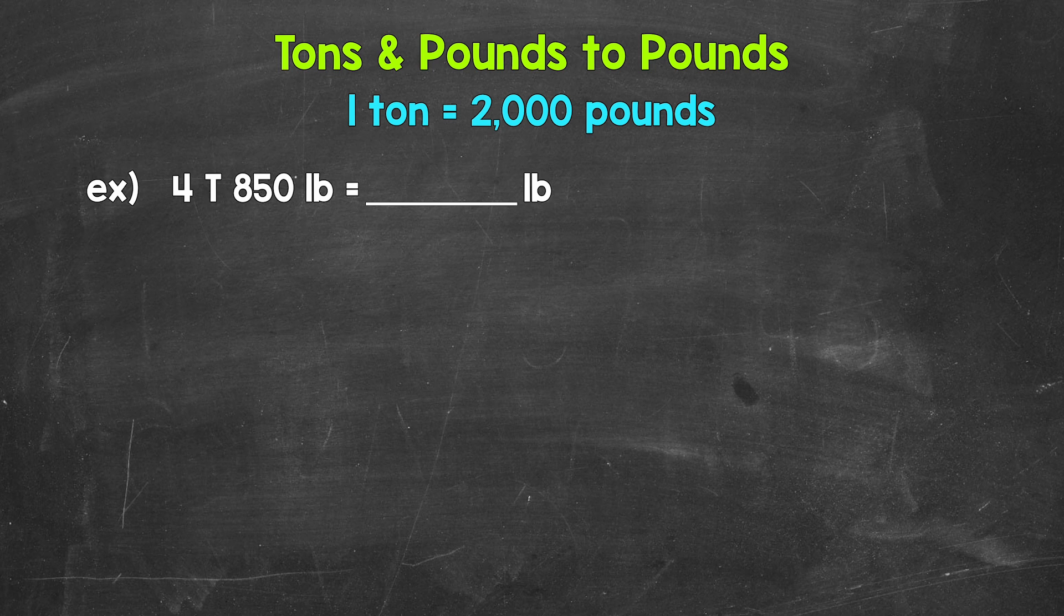So we have mixed units, tons and pounds, and we just want pounds. Now remember, one ton equals 2,000 pounds.